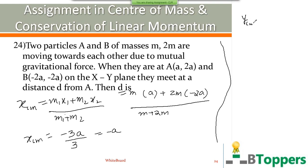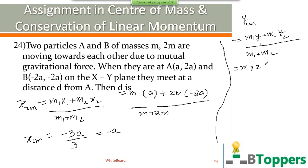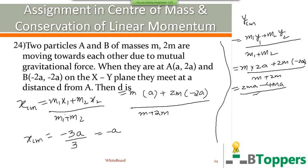So Y coordinate of center of mass equals M1*Y1 plus M2*Y2 divided by M1 plus M2. Here M1 equals M, Y1 is 2a; M2 is 2M, Y2 is -2a. So this will be 2Ma minus 4Ma by 3M. You get Y coordinate of center of mass equals -2a/3. So the center of mass of the two masses lies in between the two masses.